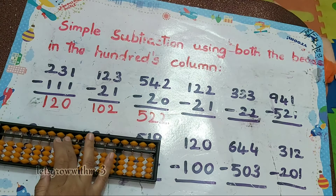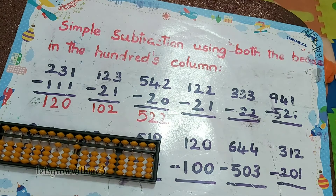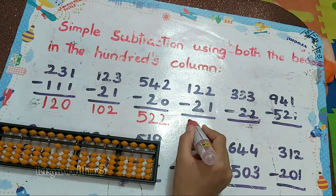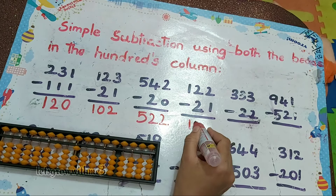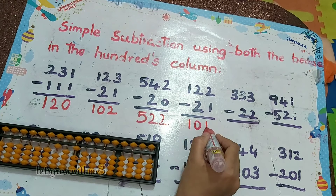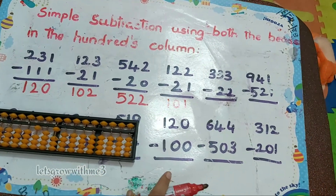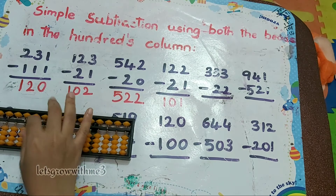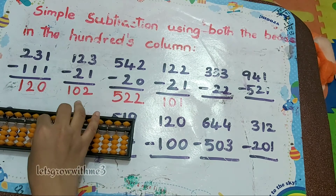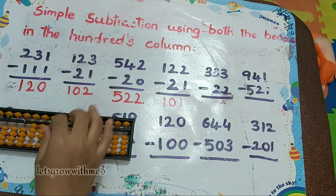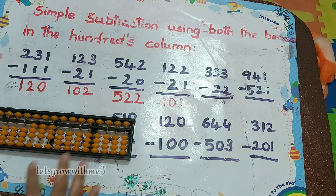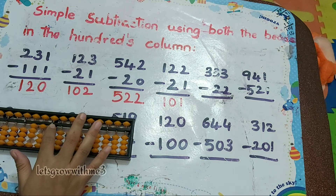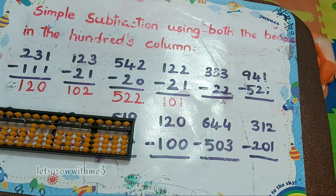Next one: 333 minus 22, so the answer is 311.